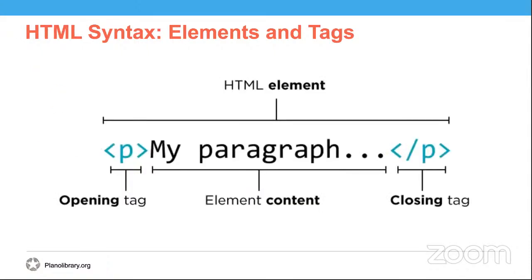Here is an example that illustrates the syntax of elements and the use of tags. This paragraph element — P for paragraph — illustrates both the opening and closing tags needed. As previously mentioned, there are several different types of elements. Let's go ahead and take a look at our first element, which is headings.